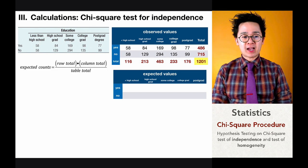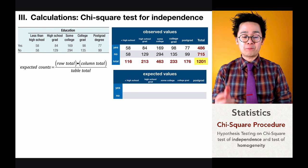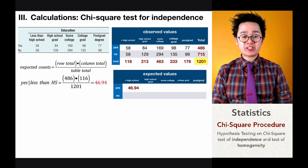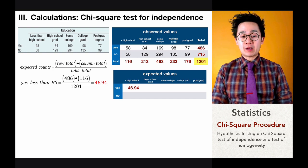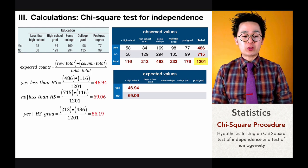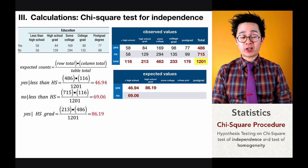The formula for expected counts in a chi-square two-way table is: row total times column total, divided by table total. For the first cell — less than high school versus yes — we multiply 116 times 486 and divide by the table total of 1,201, giving us 46.94. For the cell below it, we multiply 116 times 715 divided by 1,201, giving us 69.06. Continuing, 213 times 486 divided by 1,201 gives us 86.19. We complete the entire expected table using this formula.